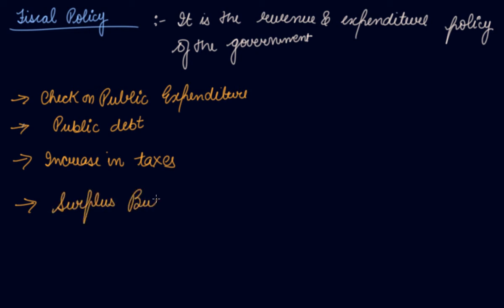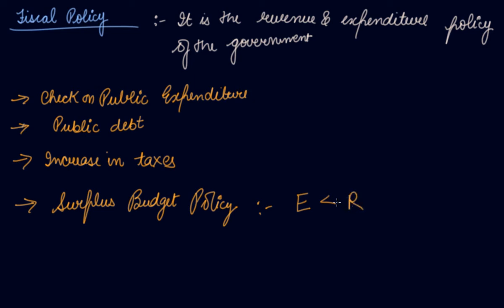The government also reduces benefits to consumers. The fourth policy is the surplus budget — a policy by which government expenditure is lowered while revenue is increased. In a surplus budget, expenditures are less than revenues or incomes.